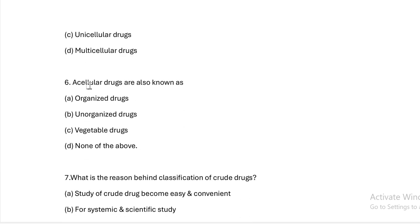Next question: Acellular drugs are also known as? In that question, cellular and organized drugs — so obviously, acellular and unorganized drugs is the answer.